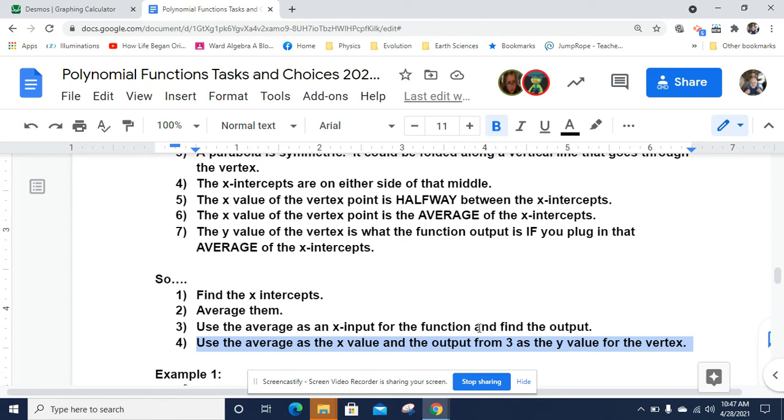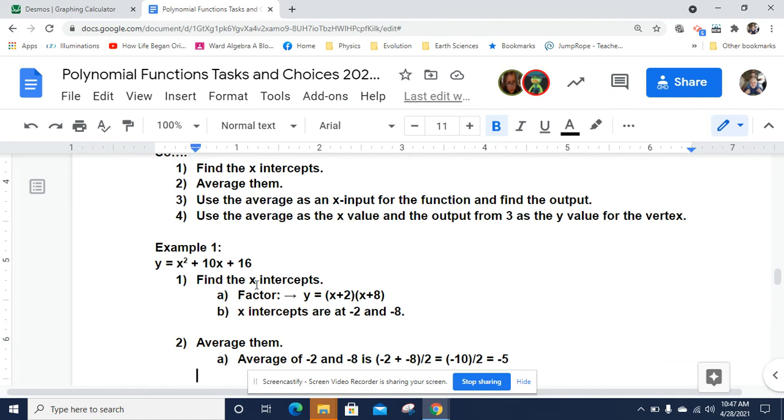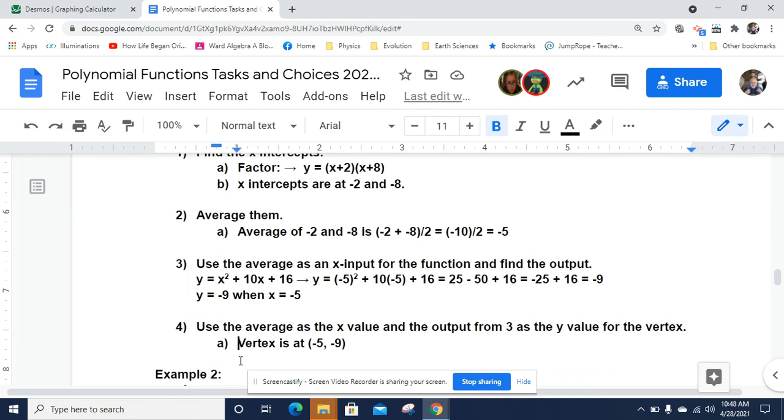And I've done a couple of examples here where I, just like I did on the video, so x squared plus 10x plus 16 is x plus 2 times x plus 8. We get x-intercepts at negative 2 and negative 8. We average negative 2 and negative 8, and we get negative 5. And then we plug in negative 5 for x wherever it shows up. So negative 5 squared plus 10 times negative 5 plus 16. Negative 5 squared is 25. Then 10 times negative 5 is negative 50. So we add that together, we get negative 25. Negative 25 plus 16 is negative 9.